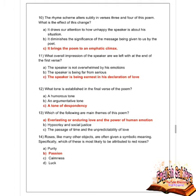Next question: which of the following are main themes of the poem? Options are everlasting and enduring love and the power of human emotion, hypocrisy and social justice, and the passage of time and unpredictability of love. Option A is correct — everlasting and enduring love and the power of human emotion.